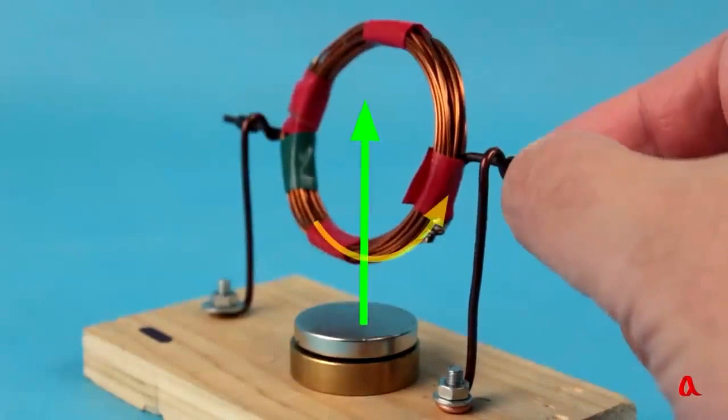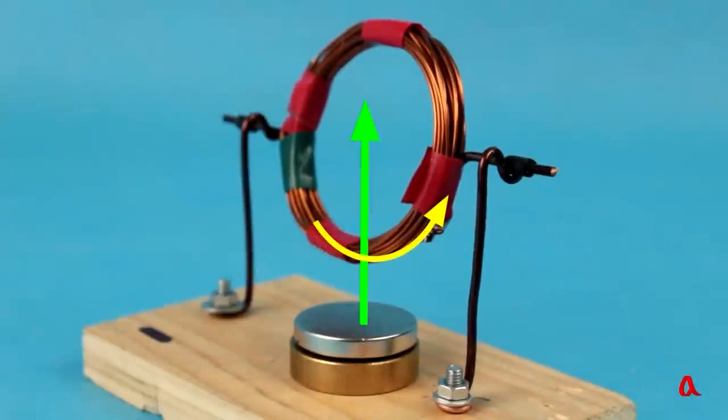After half a turn, the electric current will flow counterclockwise along the ring. Now, the ampere force is directed to the left, and it will apply braking to the coil. So, overall, it will not rotate.